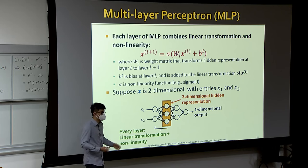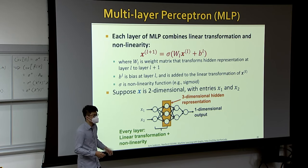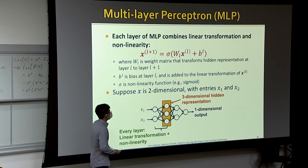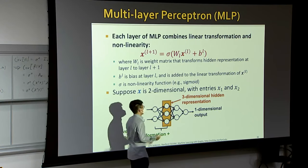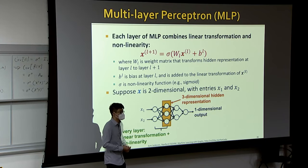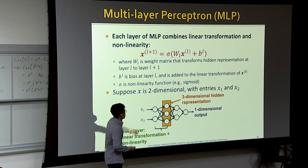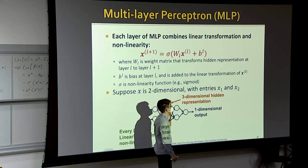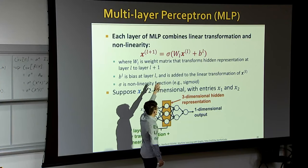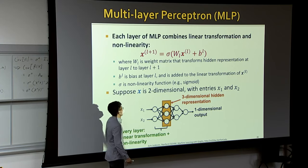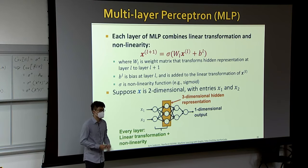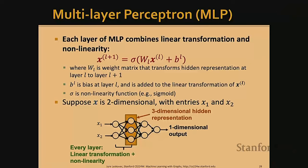Another key concept is the MLP (multi-layer perceptron). It takes input X at layer L, applies a linear transformation plus a trainable bias, then a nonlinear activation function such as ReLU or sigmoid, producing the output. This simple layer is the building block for many deep learning architectures, including graph networks and transformers, where MLPs perform linear or nonlinear projections.